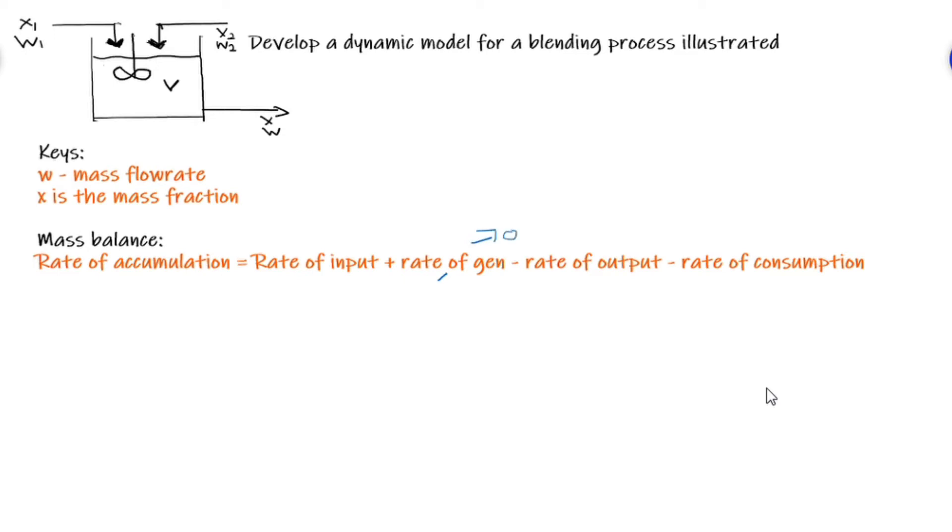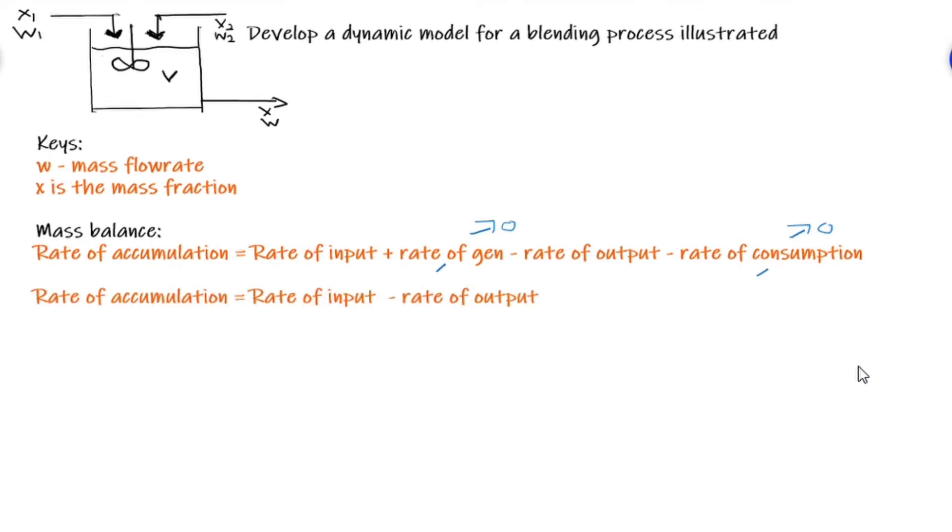For mass balance, mass balance tells that the rate of accumulation equals the rate of input plus the rate of generated subtracting the output minus the consumption. We can assume that there will not be consumption nor generation, hence we'll be left with rate accumulated equated to input subtracting the output.